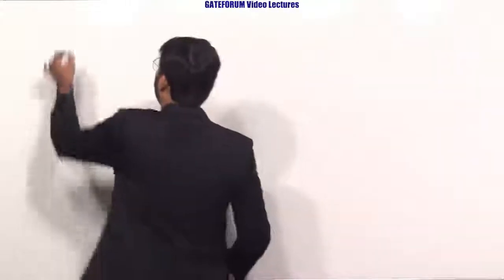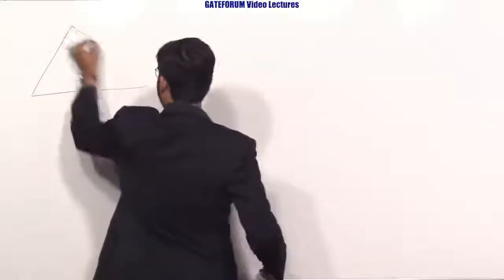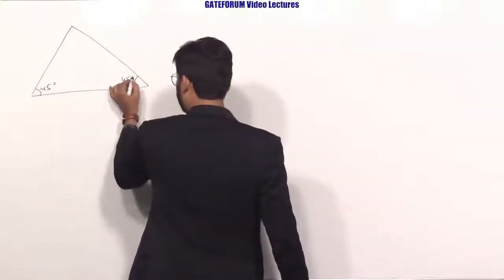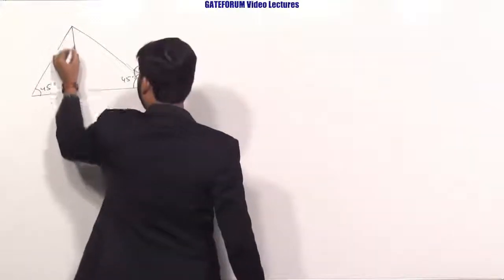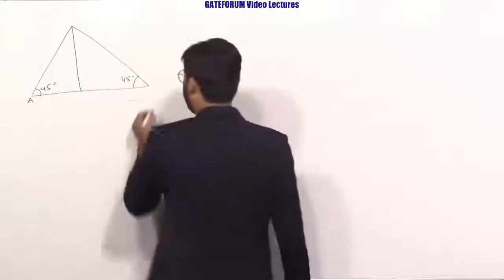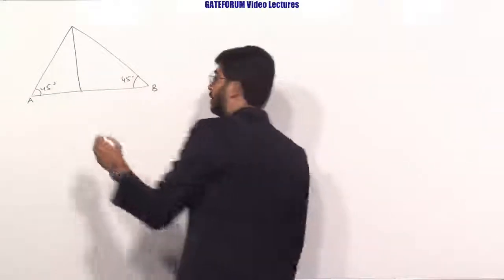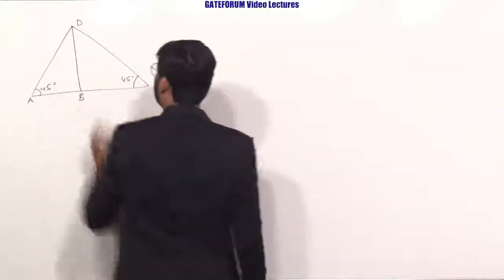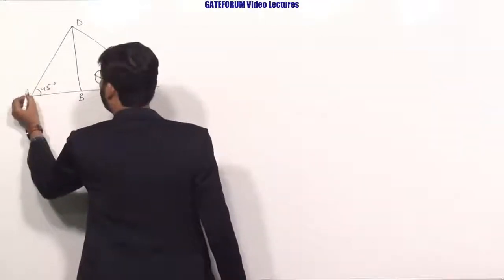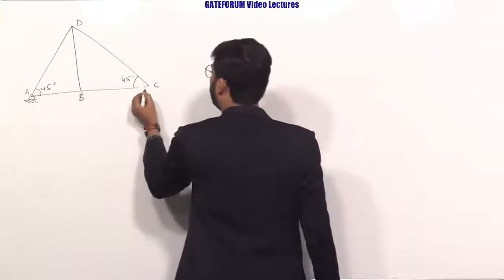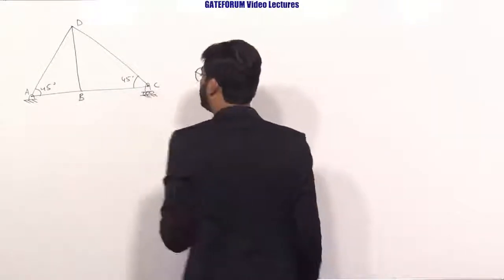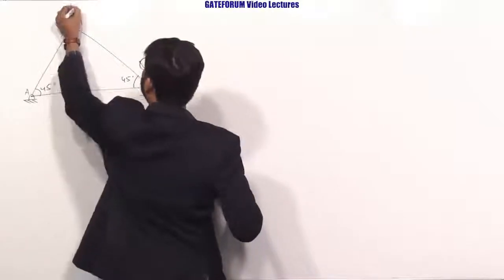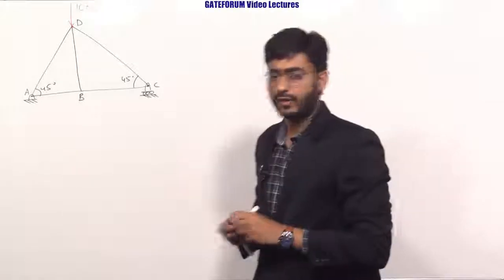Here is the truss given. This angle is 45 degrees and this is also 45 degrees. Point B is in the center, next is point C, and point D. At point A there is a hinge support, at point C there is a roller support, and at point D there is a force of 10 kilo-newtons acting.